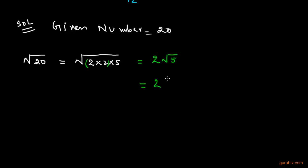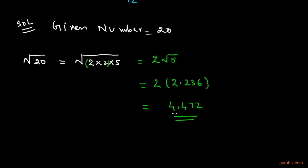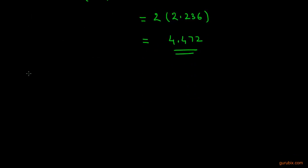Using the square root table, the value of √5 is 2.236. Now we multiply 2 with 2.236 and get 4.472. So the value of √20 is 4.472. Now we move to the second part.